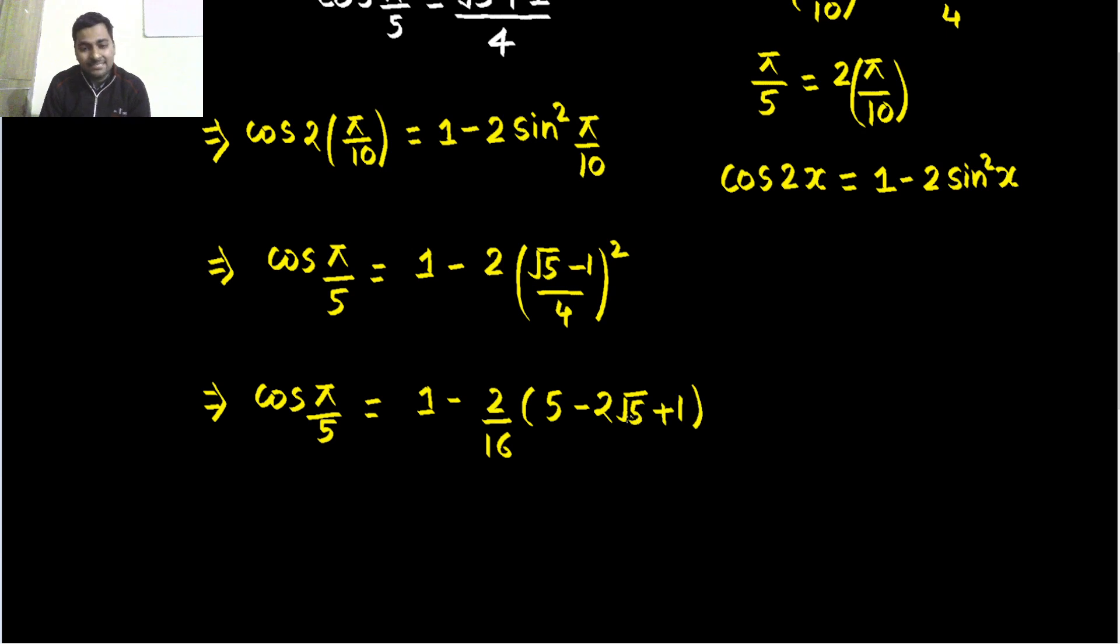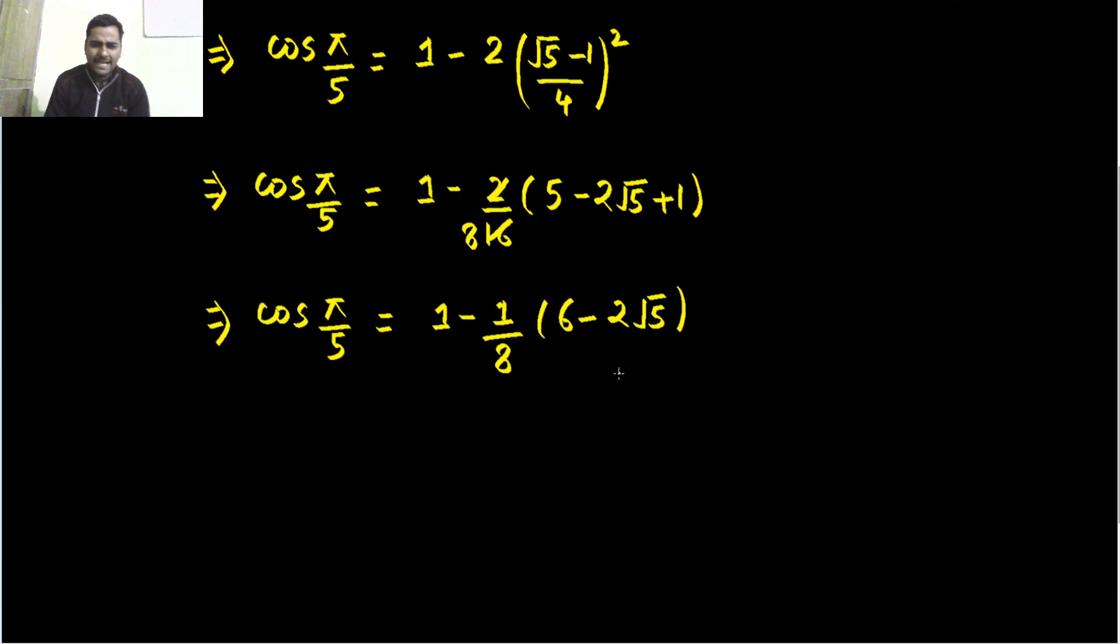So we are getting 6 minus 2√5, so let's move a step ahead. 1 minus, now we can write this as 1/8. Inside I have 6 minus 2√5. Further, I can see I can take 2 common from this bracket, so I am taking steps as simple as possible for you. So 1 minus 1/8, and I take a 2 common, so 2 comes out, inside I am left with 3 minus √5.